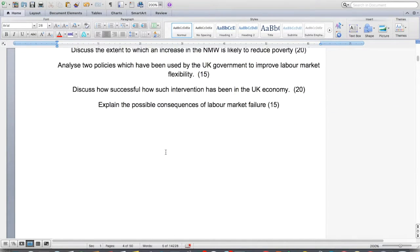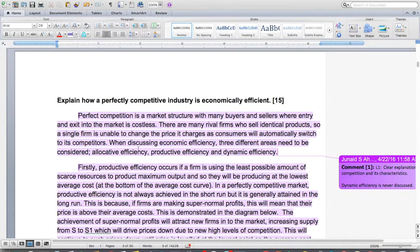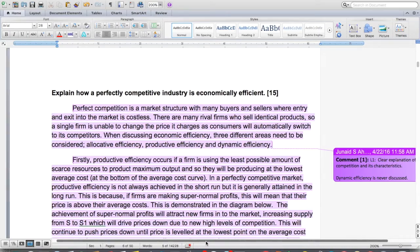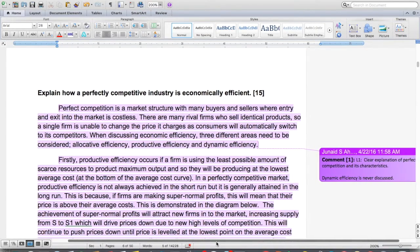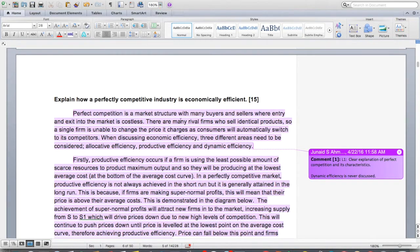Now I want to jump into the first essay, which asks you to explain how a perfectly competitive industry is economically efficient. In this essay, what we really want to do is the following. I'm going to make sure you can see this nice and clear, maybe I'll drop this down to about 180%. Now let's start with a definition of perfectly competitive, and then we would probably want to move towards explaining what does economically efficient mean.